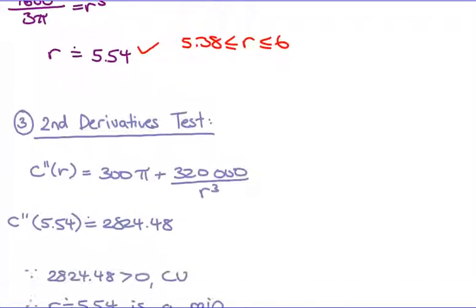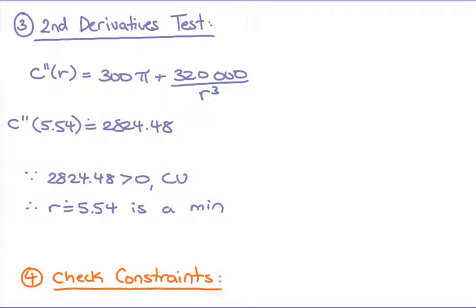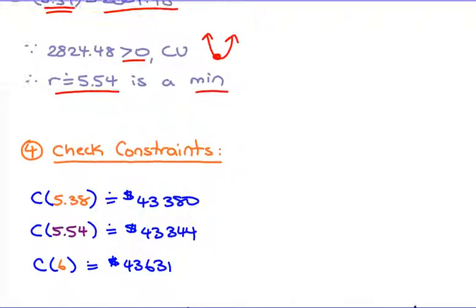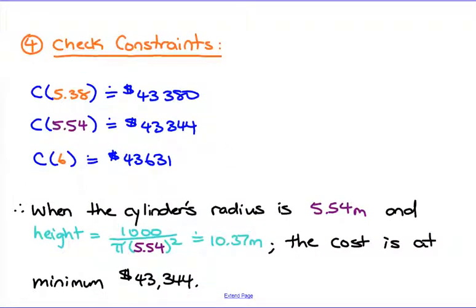Now that we have a radius, we just want to make sure that that gives us a minimum cost. So taking the second derivative, notice that you have an r. You sub in your r value that you just found, your critical value of 5.54, and solve. Your answer is actually greater than zero, which is a concave up, and that gives you a minimum at this specific r value.